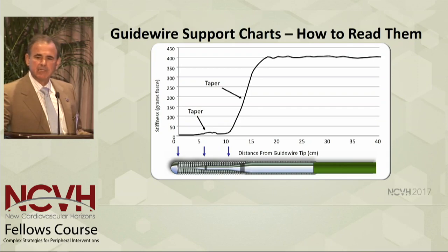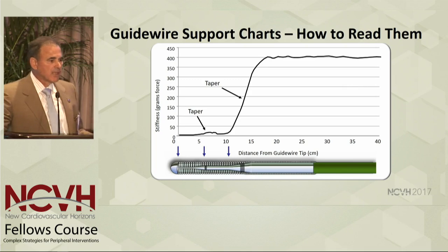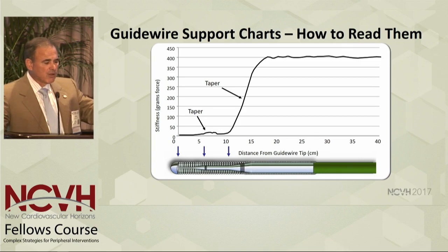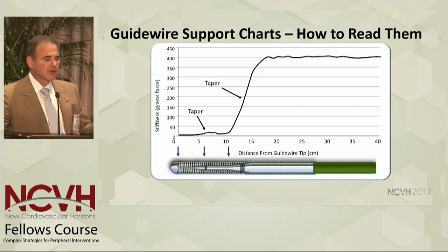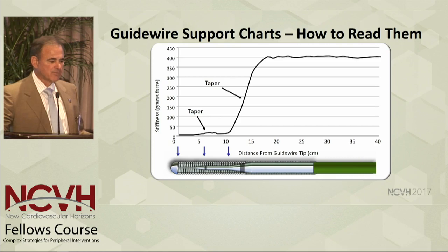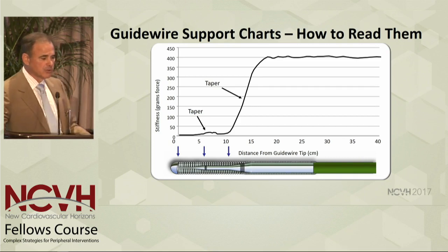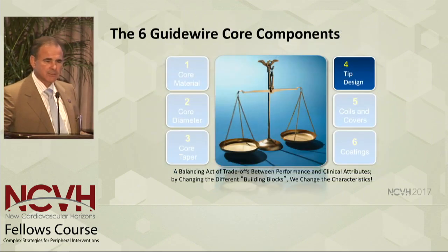We can read how many tapers there are in any wire. If you ever look at a guide wire box, you see this chart — what does it mean? The chart shows you the fall in force at each level, and stiffness is where you have the grinds. It gives you an idea of where those grinds are. In this case, we start to have a taper at around 18 centimeters from the tip, with a slow gradual taper going down to the area of 10 centimeters.